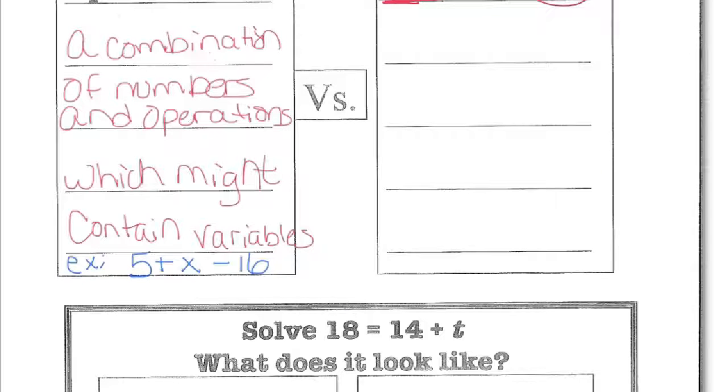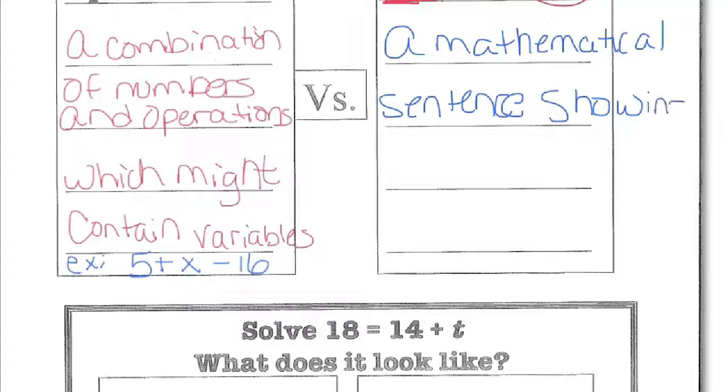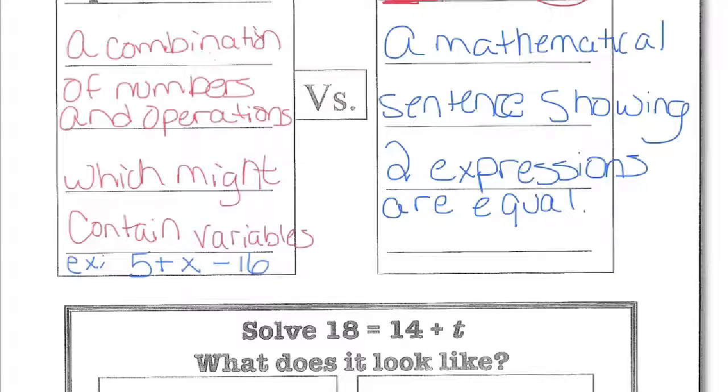The other difference that you can think of is equations, the way I'm going to write this definition, it's a mathematical sentence showing two expressions are equal. So we must have an equal sign for it to be an equation. An example would be 5 plus x equals 13. You can see you have two expressions, 5 plus x and 13. Those are expressions, and we're showing that they are equal.